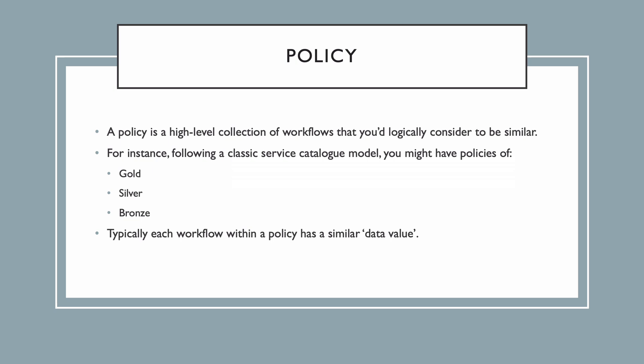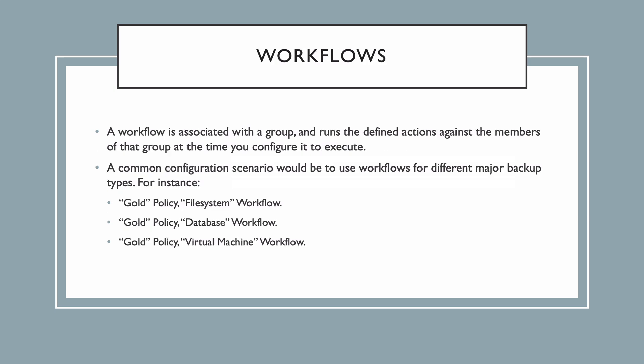For instance, if you follow a classic service catalogue model, you might have policies of gold, silver, and bronze. If your business has data protection service catalogue options of tier 1, tier 2, tier 3, and so on, you can create policies named like that. The key thing is that from a logical configuration perspective, each workflow within a policy should have a similar value to its data to the business. A workflow is associated with a group. A workflow runs a set of one or more defined actions against the members of the group at the time that you configure it to execute.